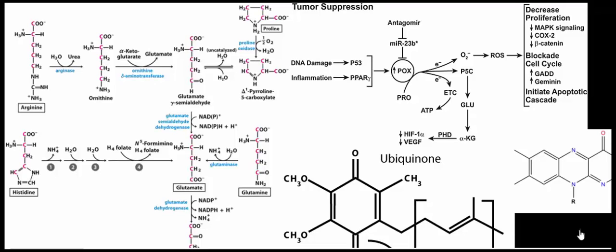Welcome back to the playlist on amino acid catabolism. In this video, we're going to talk about the two amino acids that get degraded to glutamate gamma semi-aldehyde. In the first half of this video, I want to talk about the easier one, and that's going to be arginine.